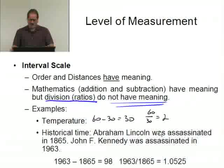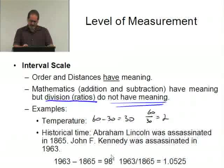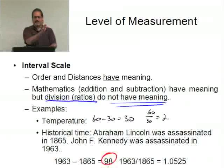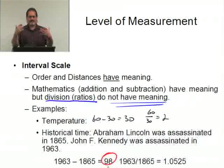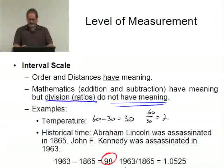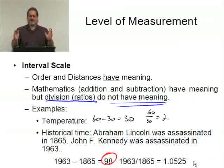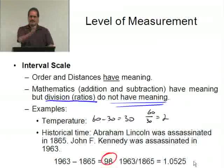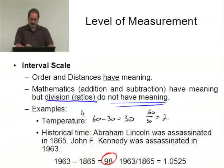Another example is historical time. Abraham Lincoln was assassinated in 1865; John F. Kennedy was assassinated in 1963. 1963 minus 1865 is 98 — there were 98 years between the assassinations, and that has meaning. But 1963 divided by 1865 is roughly 1.05. What does that mean? Does it mean it took 1.05 times longer to assassinate President Kennedy than President Lincoln? That has no meaning. The ratio is not preserved, but the subtraction — the distance — does have meaning.